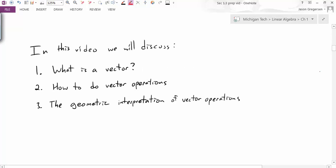First, we want to find out what is a vector. Next, we want to talk about how to do vector operations. Specifically, we're going to learn how to add, subtract, and multiply vectors by scalars. Lastly, we want to talk about the geometric interpretations of these vector operations.